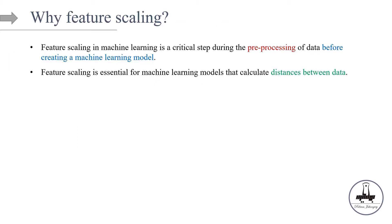Why feature scaling? Feature scaling in machine learning is a critical step during the preprocessing of the data, done even before creating a machine learning model itself. It is essential for models that calculate the distance between data points — examples include KNN in supervised learning, K-means clustering in unsupervised, and principal component analysis.